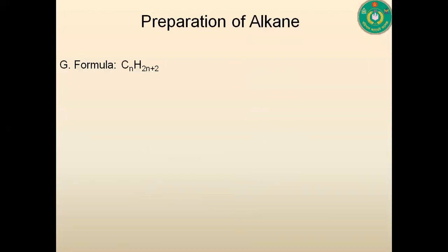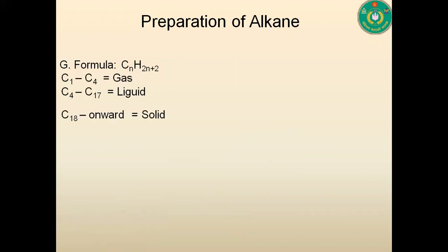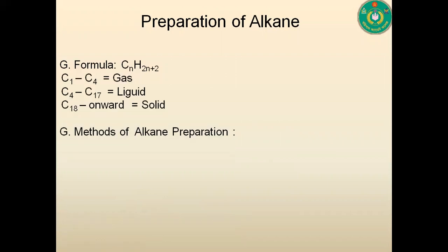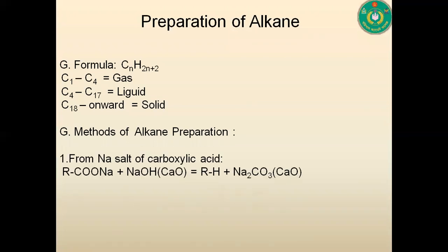Preparation of alkane: if the number of carbons is C1 to C4, the compound is a gas; C4 to C17, liquid; C18 and above, solid. The sodium salt of carboxylic acid, when reacted with calcium hydroxide in the presence of sodium hydroxide, forms alkane. The product contains fewer carbon atoms than the reactant — for this reason the reaction is called a decarboxylation reaction.